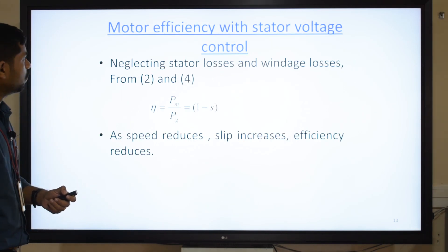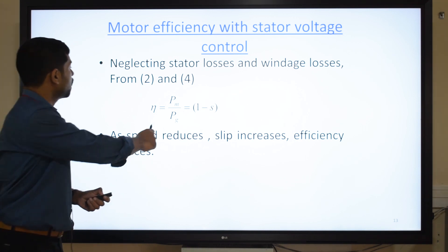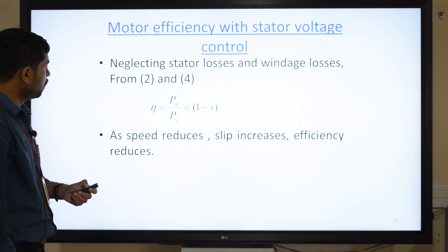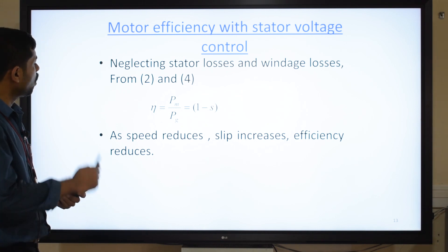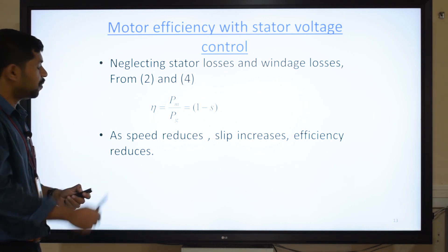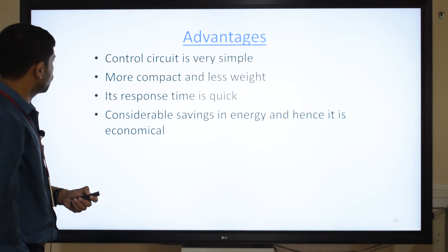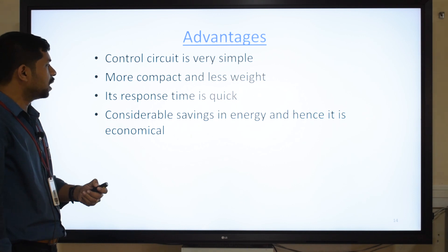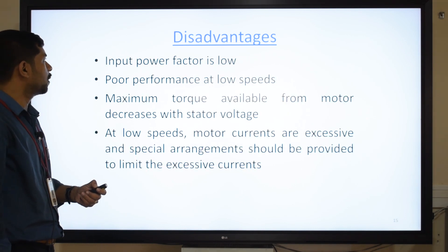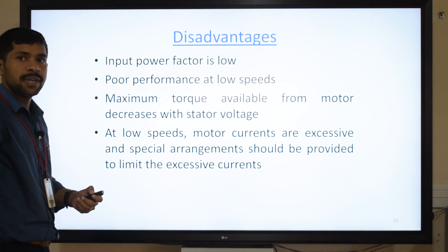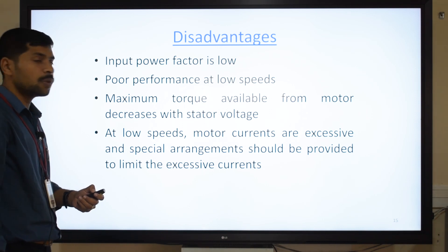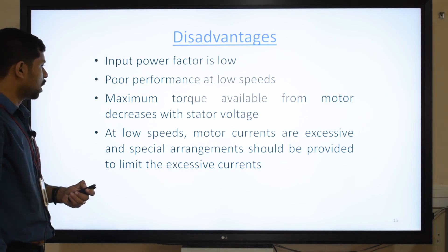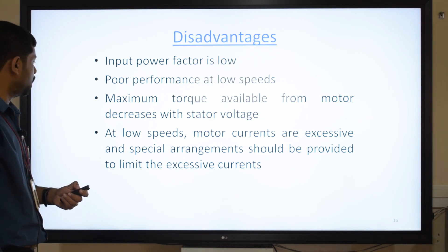The efficiency equation, derived from equations 2 and 4 by neglecting stator losses and windage losses, is: efficiency equals (1 minus s). So whenever speed reduces, slip increases, and whenever slip increases, efficiency is reduced. Advantages: the control circuit is simple, compact, and lightweight; response time is quick; and there is considerable energy saving, making it economical. Disadvantages: input power factor is very low; poor performance at lower speeds; maximum torque available decreases with stator voltage; and at low speeds, motor currents are excessive, requiring special arrangements to limit them.